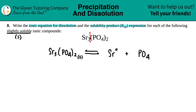Now I need to find the charges. Remember the crisscross method: we take the subscripts, the 3 and the 2, and crisscross them back up. The 3 crisscrosses up telling me phosphate is a negative three — and phosphate is always a negative three charge. The 2 crisscrosses up telling me strontium is a plus two — strontium is in group two, so it's always plus two.